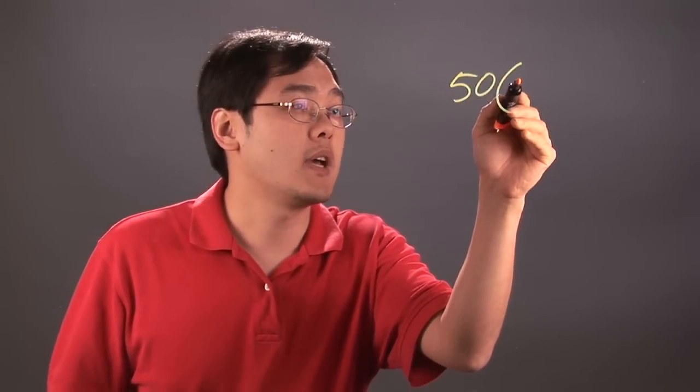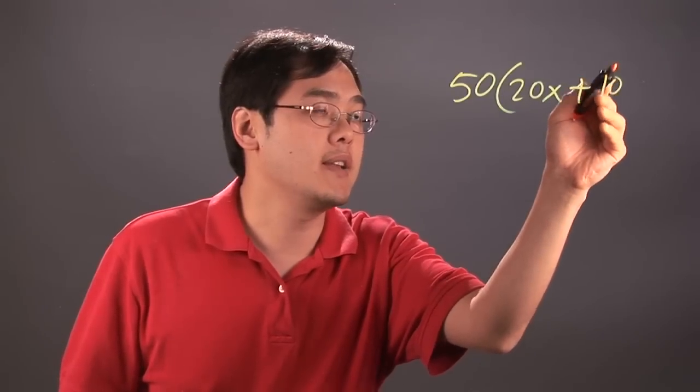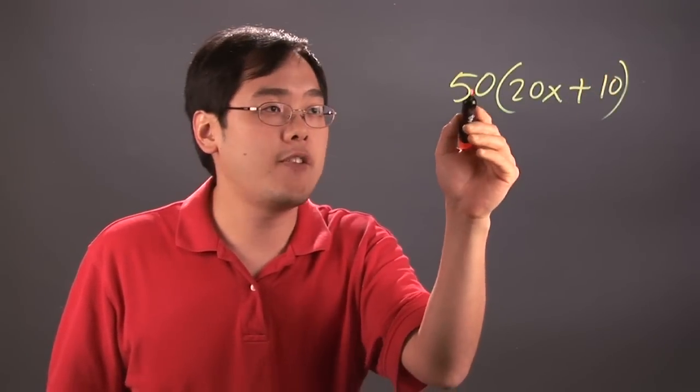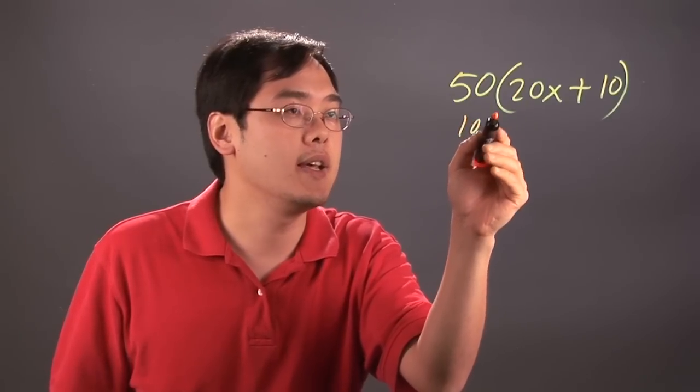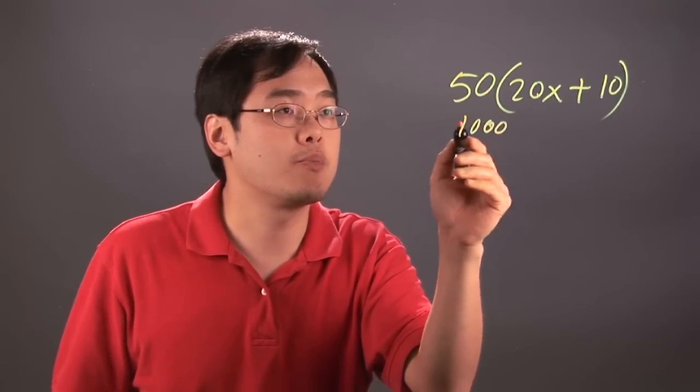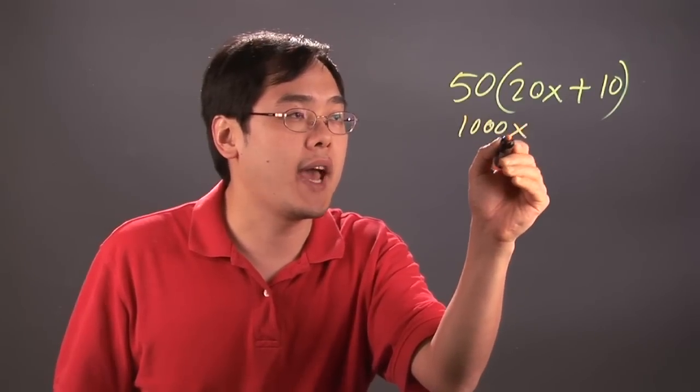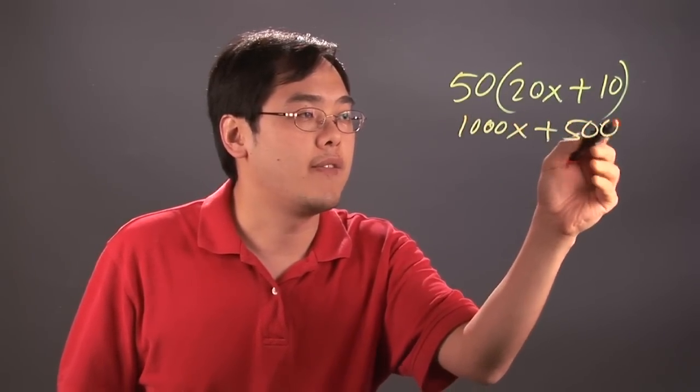So here's a couple of illustrations to kind of help you out. Now if you have let's just say 50 times 20x plus 10 as an illustration, when you have 50 times 20, you can think about as 5 times 2, that's going to give you 10. And then since you have two more zeros, you just put the two zeros there. So you have 1000x plus, and then 50 times 10, that's going to give you 500.